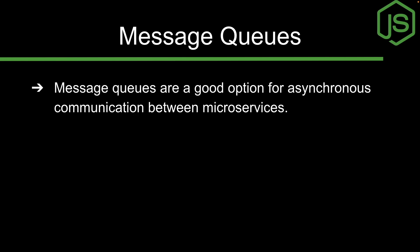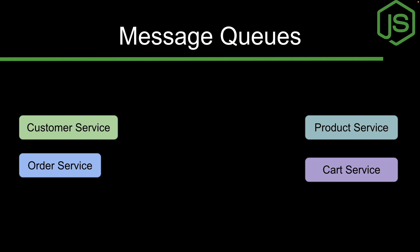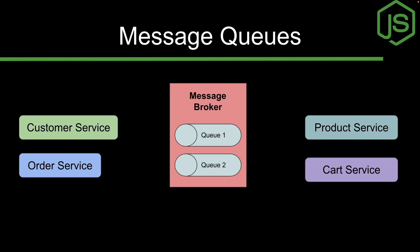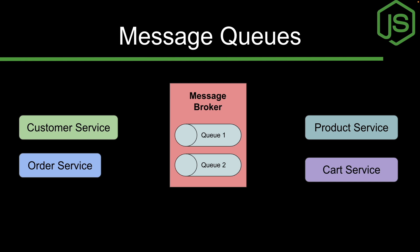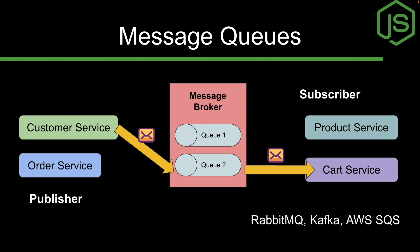The second popular choice is message queues — a good option for asynchronous communication between microservices. Each microservice can publish a message to a queue and other microservices can consume those messages. In this model, a message broker sits between services. For example, if customer service wants to access cart data, customer service is the publisher and cart service is the subscriber consuming messages via the queue. Popular message brokers include RabbitMQ, Kafka, and AWS SQS.